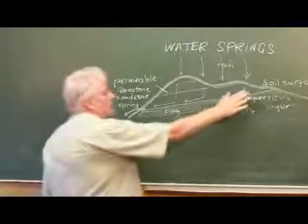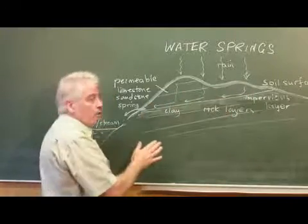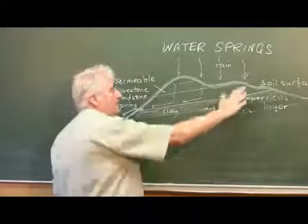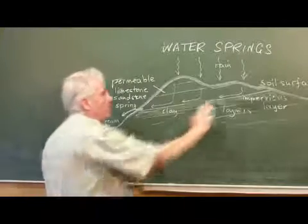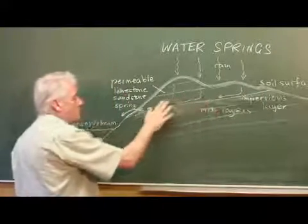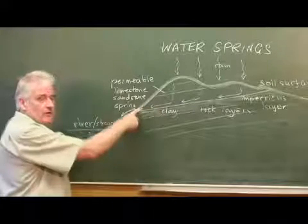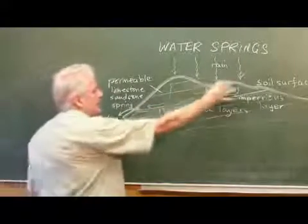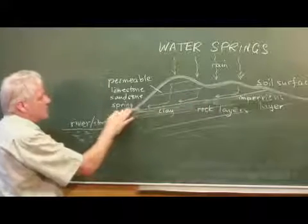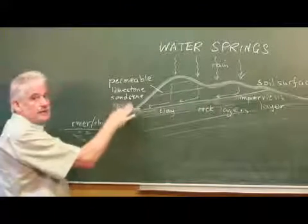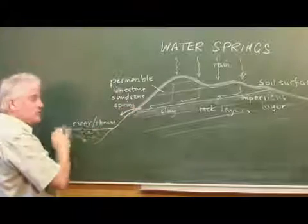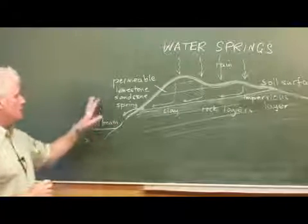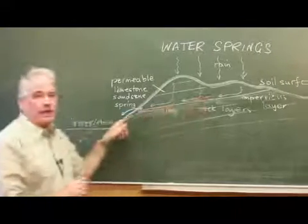And once it's reached that clay, it can go no further. So what it then does is follow the contour, remembering it has to obey the laws of gravity, and therefore it's going to go downhill and not uphill. It will flow along that surface until it comes to the land surface. And at that point, you will see a spring. That is, the water that is collected over this large area comes out through usually a line of small springs, and then flows down into a stream. It produces a stream that flows into a river. So this is the purpose, this is the way that the spring actually is created.